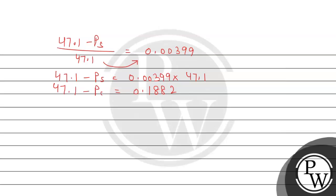47.1 minus PS, so PS will equal 47.1 minus 0.1882. The final answer will be 46.91 torr.